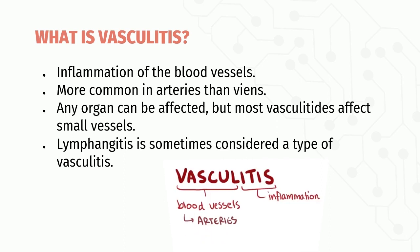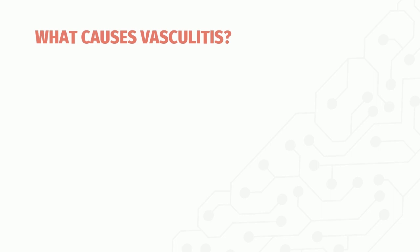Vessels of any type in virtually any organ can be affected, but most vasculitides affect the small vessels, ranging in size from arterioles to capillaries to venules. Lymphangitis, which means the inflammation of lymphatic vessels, is also sometimes considered a type of vasculitis.